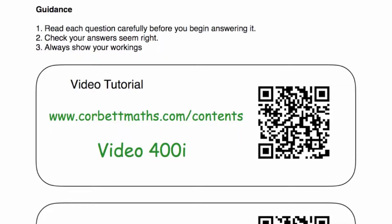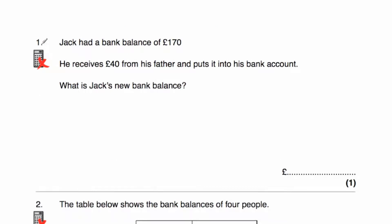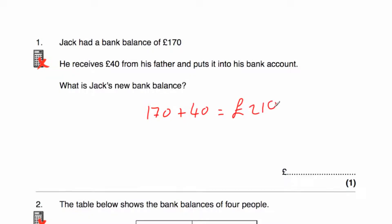Let's have a look at our first question. Jack had a bank balance of £170. He receives £40 from his father and puts it into his bank account. What's Jack's new bank balance? We just need to add 40 onto 170. Adding 30 brings us up to 200, add another 10 would be £210. So Jack would have a bank balance of £210.